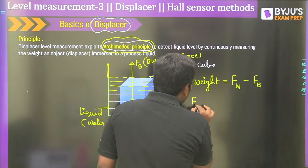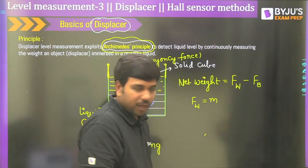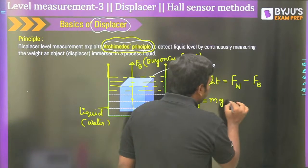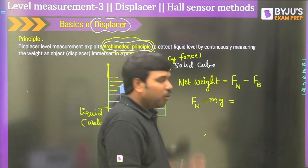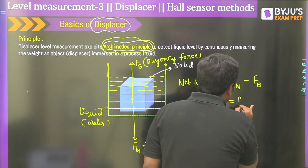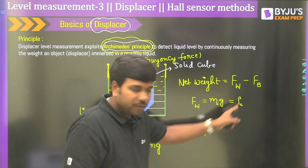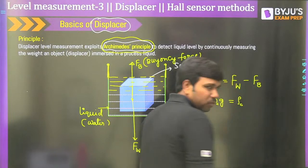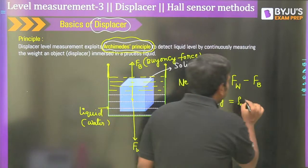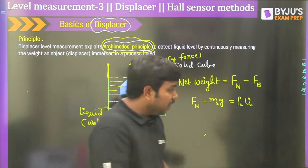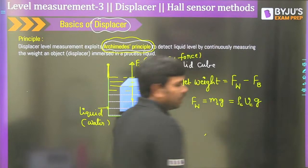So the relationship is: if the water level increases, the net weight decreases. More water level means the gauge rotates toward the minimum side. The calibration says: if the tank is empty, the needle is at maximum; if the tank is full, the reading is at zero. That is how we decide the level using this principle.